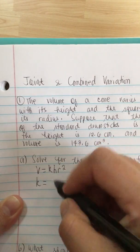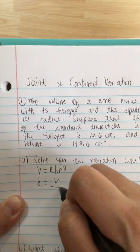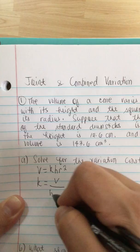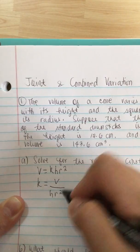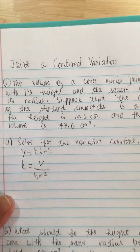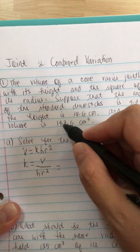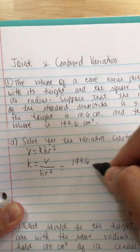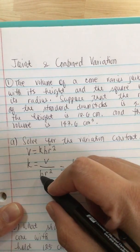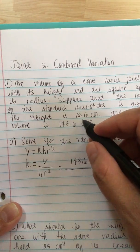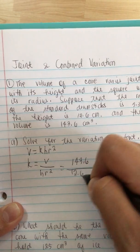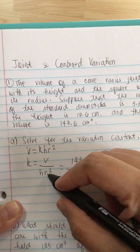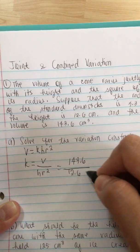K is equal to V over the height times the radius squared. So now we plug in our numbers. The volume is 143.6, the height is 12.6, and the radius is 3.3.